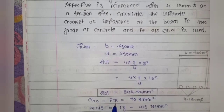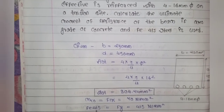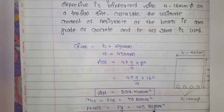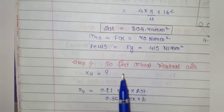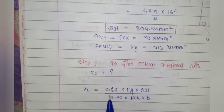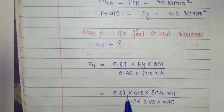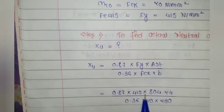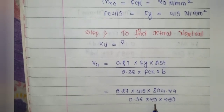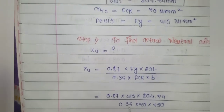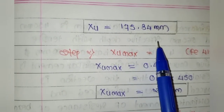M20 grade means fck = 20 N/mm². Fe415 means fy = 415 N/mm². Step 1: Find actual neutral axis XU. Formula: XU = (0.87 × fy × AST) / (0.36 × fck × B) = (0.87 × 415 × 804.24) / (0.36 × 20 × 230) = 175.34 mm.